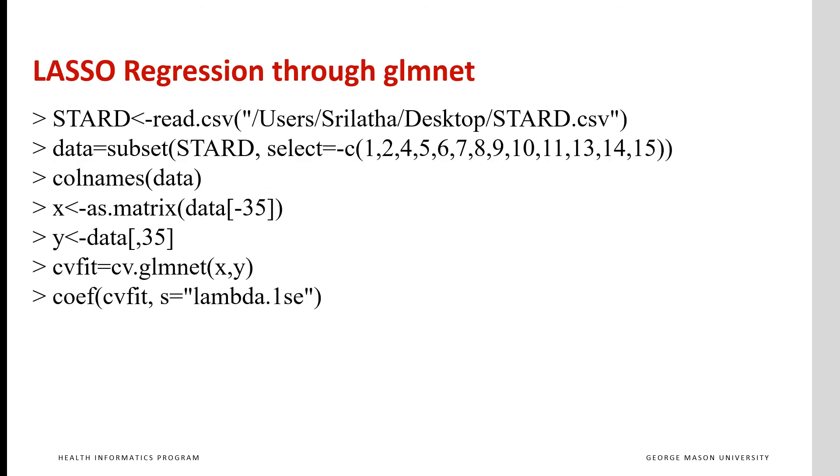Here is a code for doing LASSO regression using the package GLMNET. First, you read the data and drop variables that are not relevant to the analysis. You use the command subset to drop the variables that you don't need. You need to exclude the response variable from the matrix of independent variables. So here the negative 35 says that that variable cannot be part of the X variables. You need to set the response variable. Here the column 35 is set as the response variable, and in column 35 we have actual use of citalopram, the antidepressant.